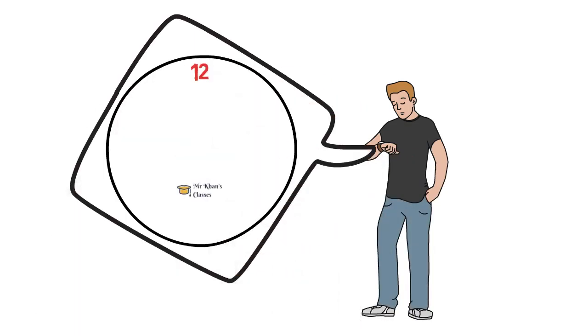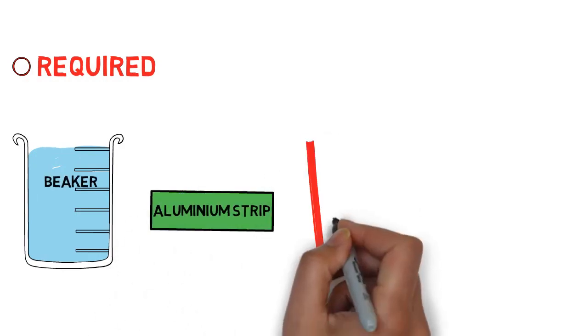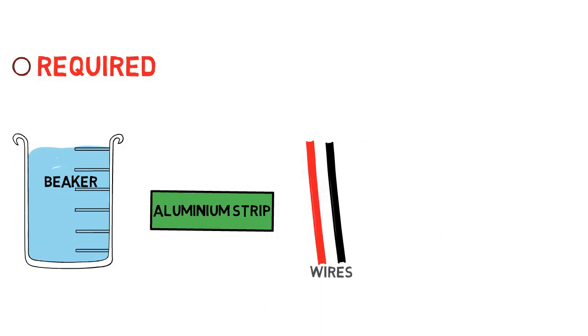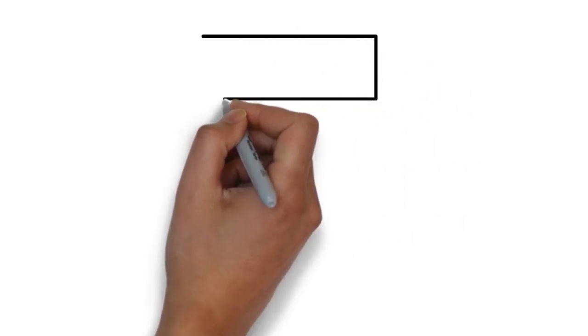You have been waiting since long to learn the anodizing process. We need the following things to understand anodizing process: one beaker, an instrument made of aluminum, two wires, and one battery. Let's perform the activity.